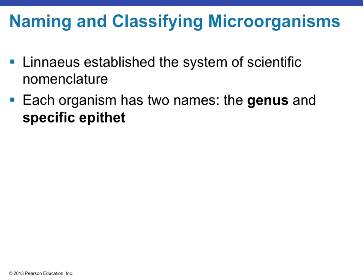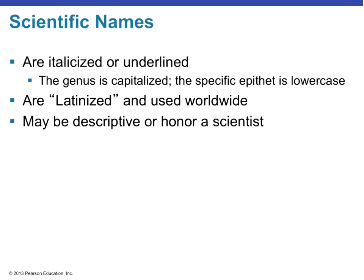Now we're going to cover how we name and classify microorganisms. Carlos Linnaeus established the binomial nomenclature of naming organisms, which you may know as genus and species. For humans, our scientific name is Homo sapiens. In microbiology, we call the two names the genus and the specific epithet. One organism we'll work with routinely is Escherichia coli, also known as E. coli — Escherichia is the genus name and coli is the specific epithet.